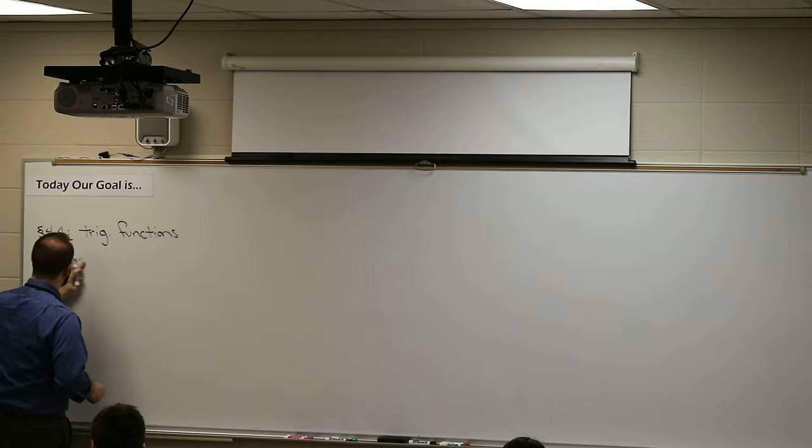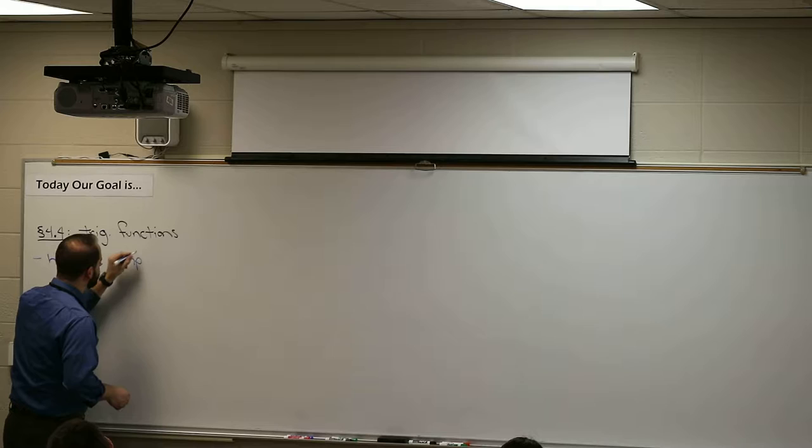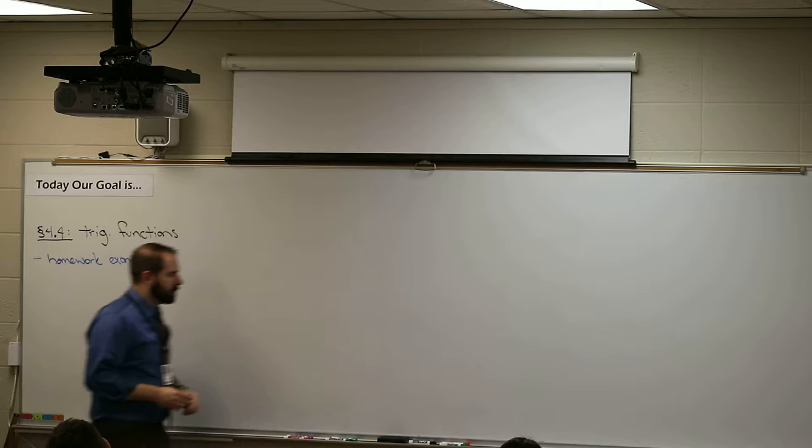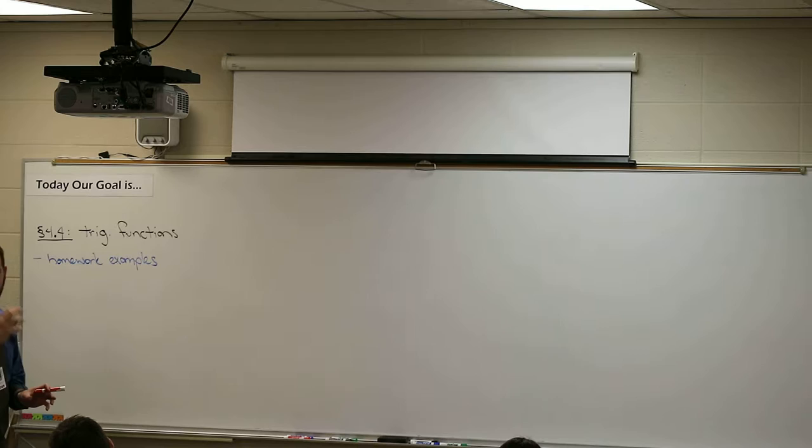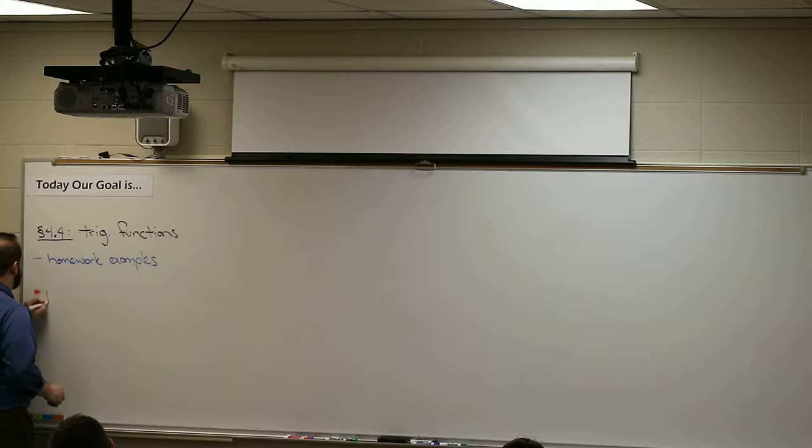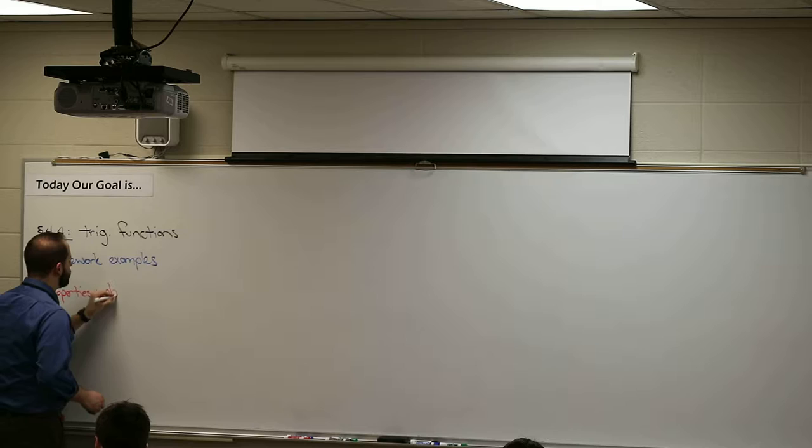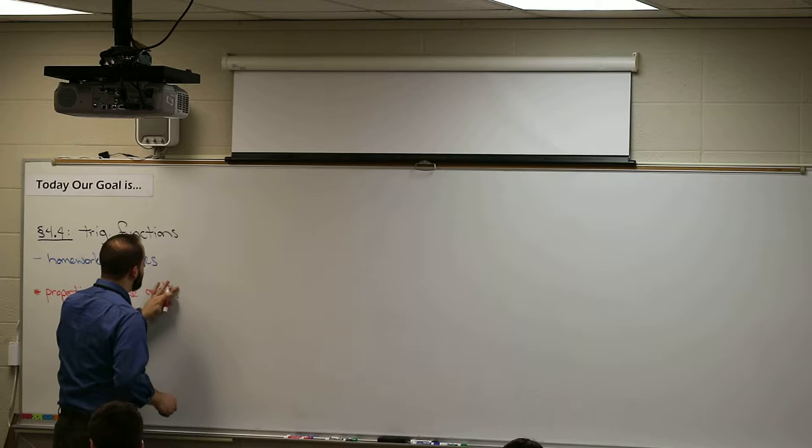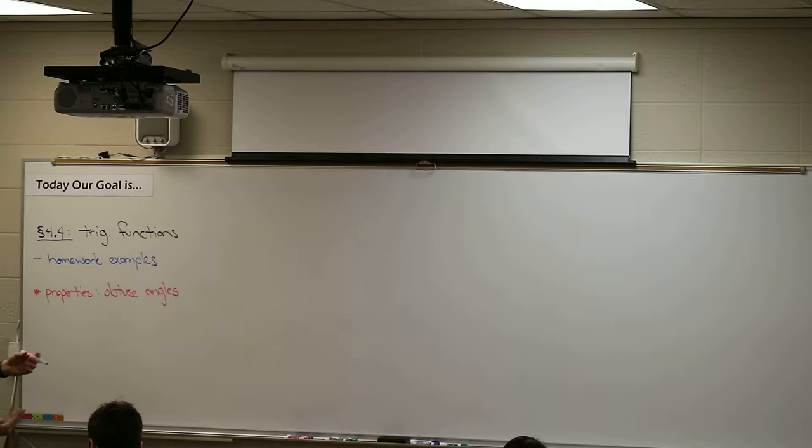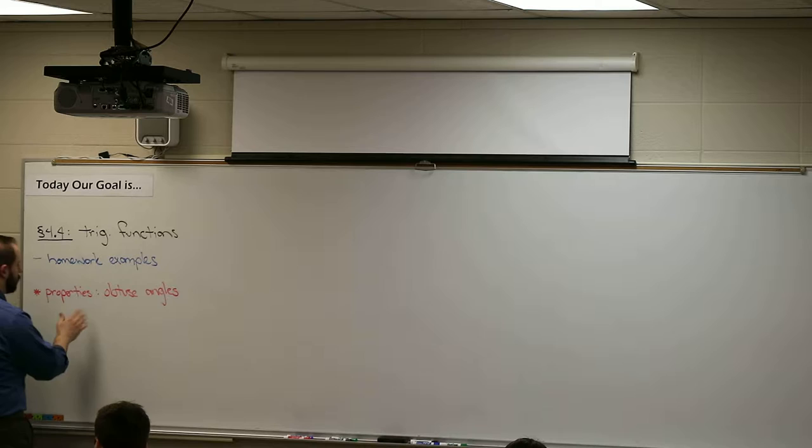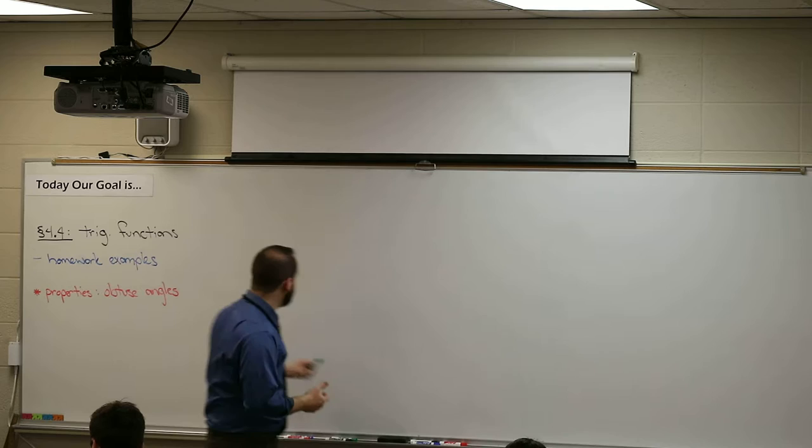So we'll do a couple homework examples, and then we'll talk about what we're going to go into. I'm going to get you started on that because it will not take you the entire class. If you have a calculator, it will be done really short. They're very straightforward problems. They want you to find a single number that's missing. But I do want to introduce a new property today. We've got some properties when we have obtuse angles. We're going to deal with obtuse angles—angles from 90 even up to 180. That's what we're going to look at today.